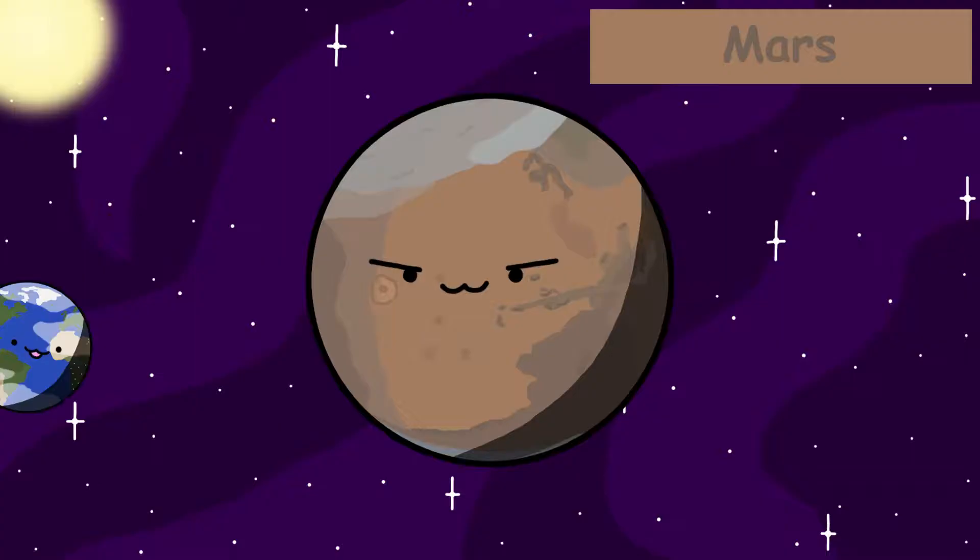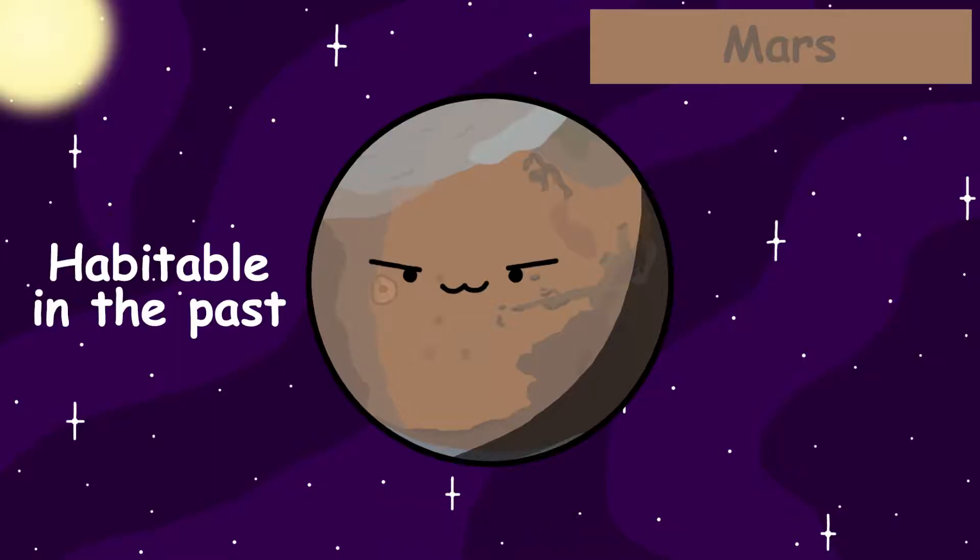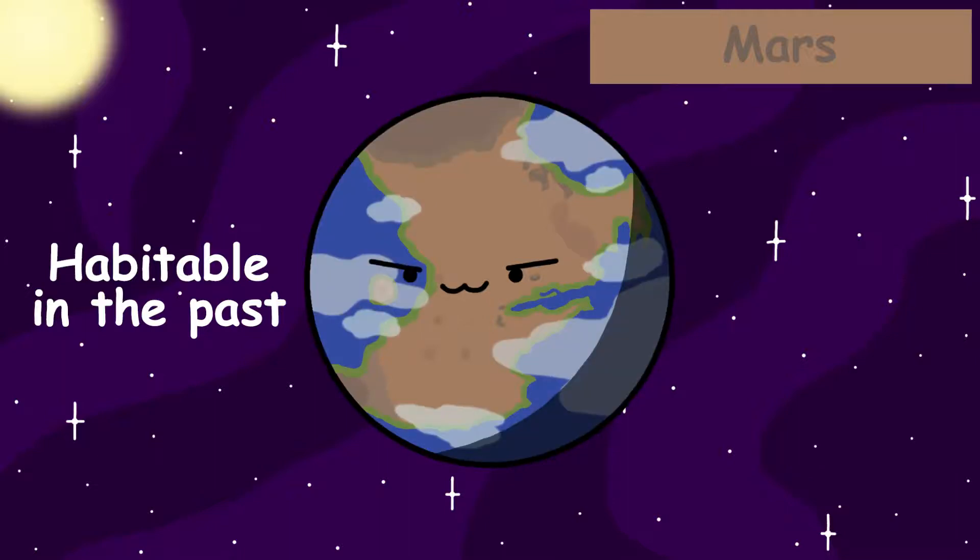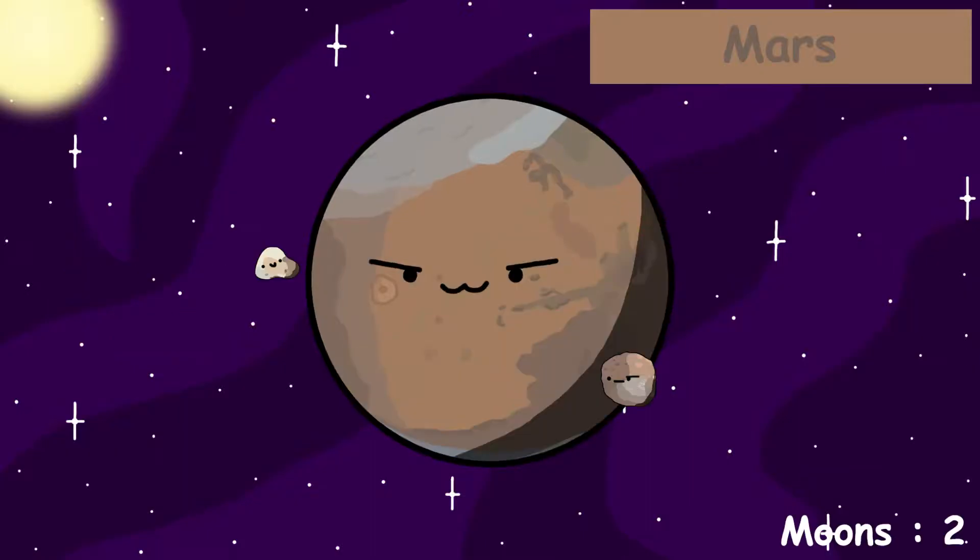Mars has a similar day to Earth, completing a rotation every 24 hours and 36 minutes, while orbiting the sun every 687 Earth days. Mars is believed to have been habitable in the past, looking very much like Earth, until the sun destroyed any chances of Mars having life. Mars has two moons.